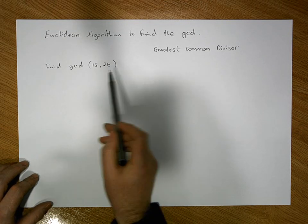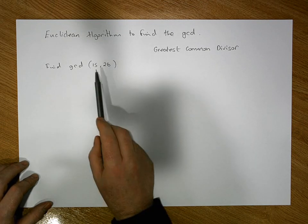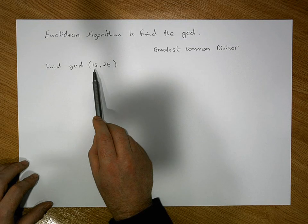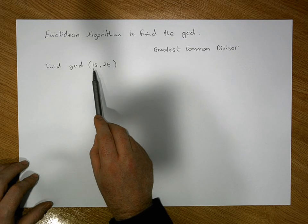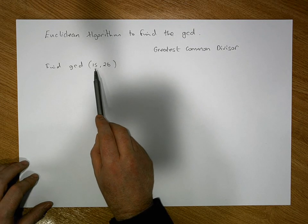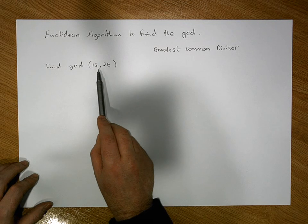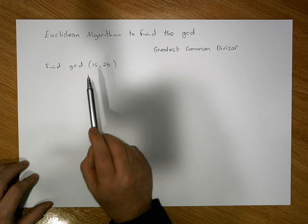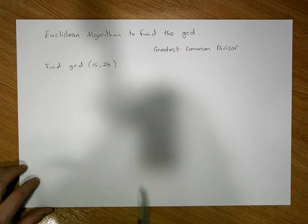We could do it by trial and error by going through all the numbers from all the non-trivial numbers, from 1 up to 15, and seeing what's the largest one in that particular list that divides 15 and also divides 26. For our purposes, we'll use the Euclidean algorithm.